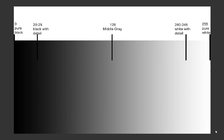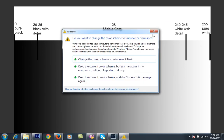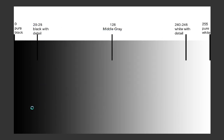In photography, we call the area beyond 245 the blown-out area. At level 255 you get pure white with no detail. On the other end, values around 20 to 25 are called black with detail — if you have those values in your levels, you have a black area that still contains detail. Anything below that, down to level 0, means there is no detail in your image.